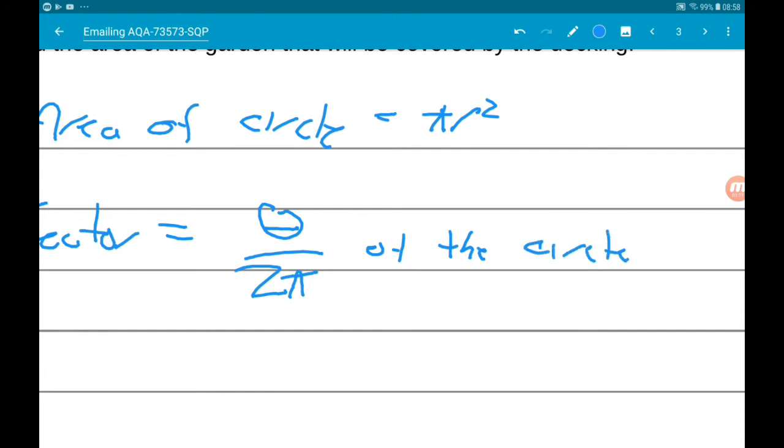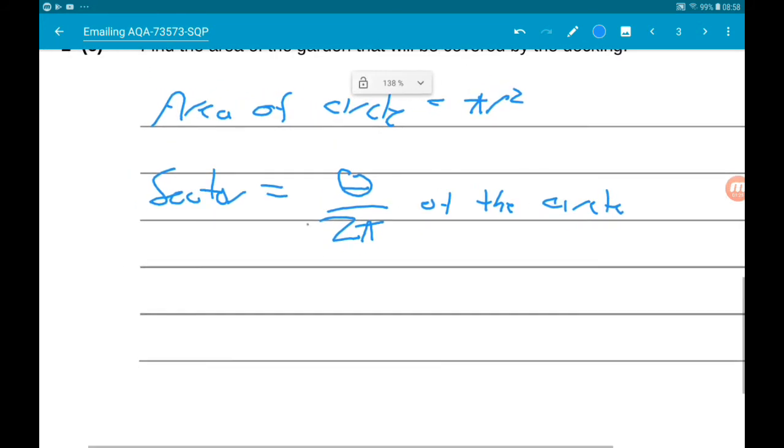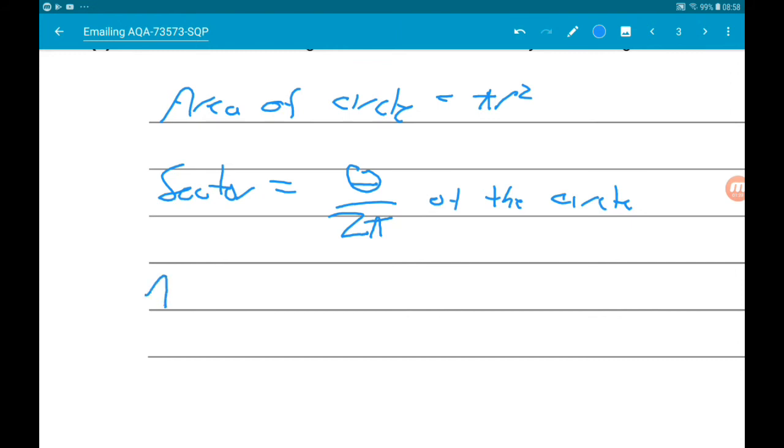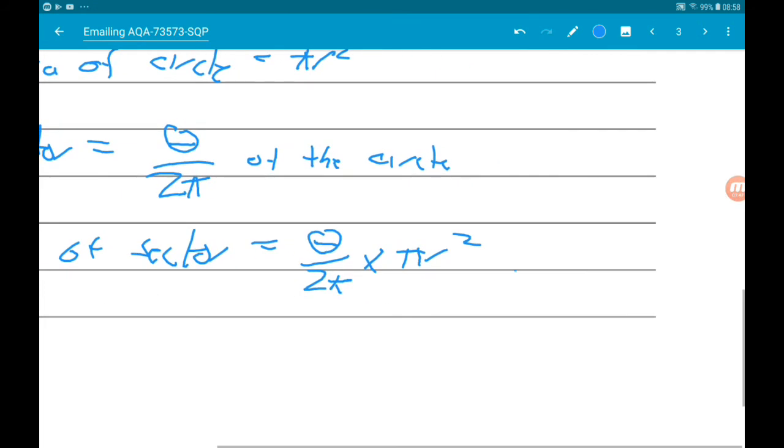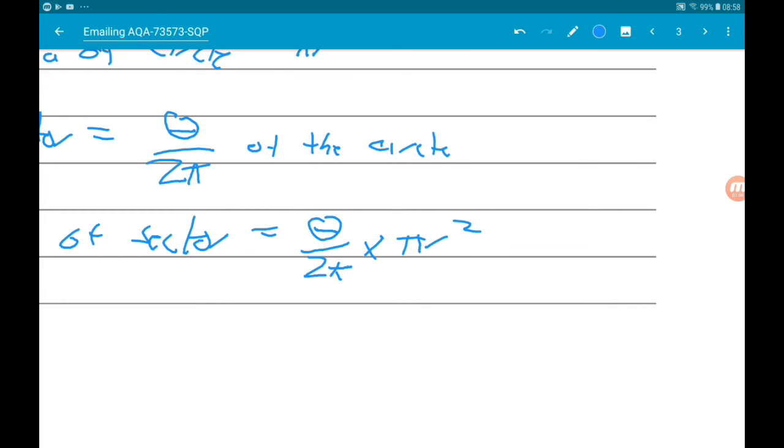2 pi is 360 degrees. So theta over 2 pi in radians is the fraction of the circle that the sector is. So the area of the sector is theta over 2 pi times pi r squared.